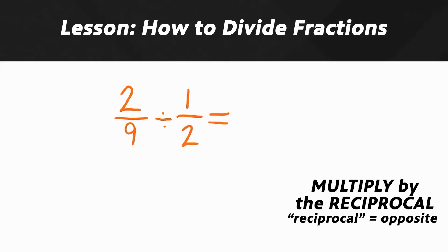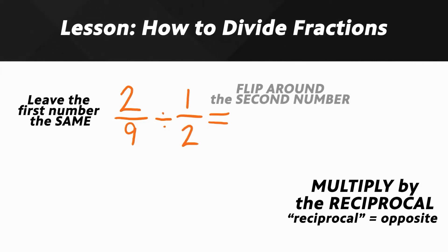So in these problems, it means to take the second number and flip it around. Leave the first number the same, but take the second number and do the opposite of it and then multiply straight across. So in this case,